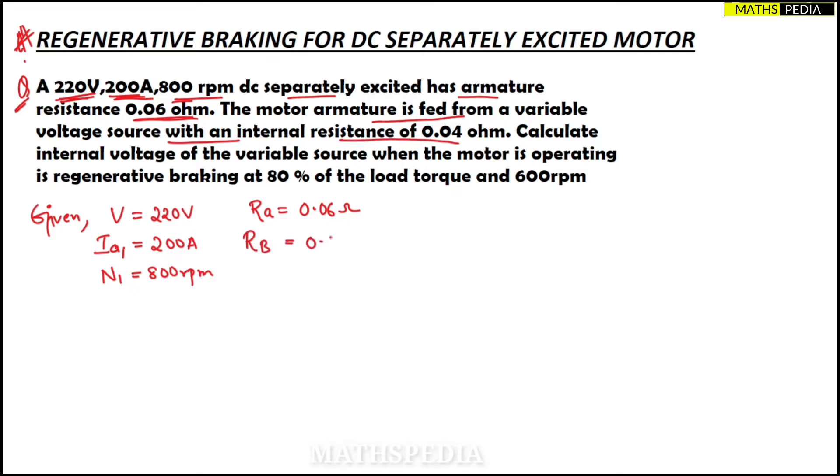Rb = 0.04 ohms. Calculate the internal voltage of the variable voltage source when the motor is operating in regenerative braking at 80 percent of load torque and 600 rpm. So we have N2 = 600 rpm. Now we have to calculate the internal voltage.